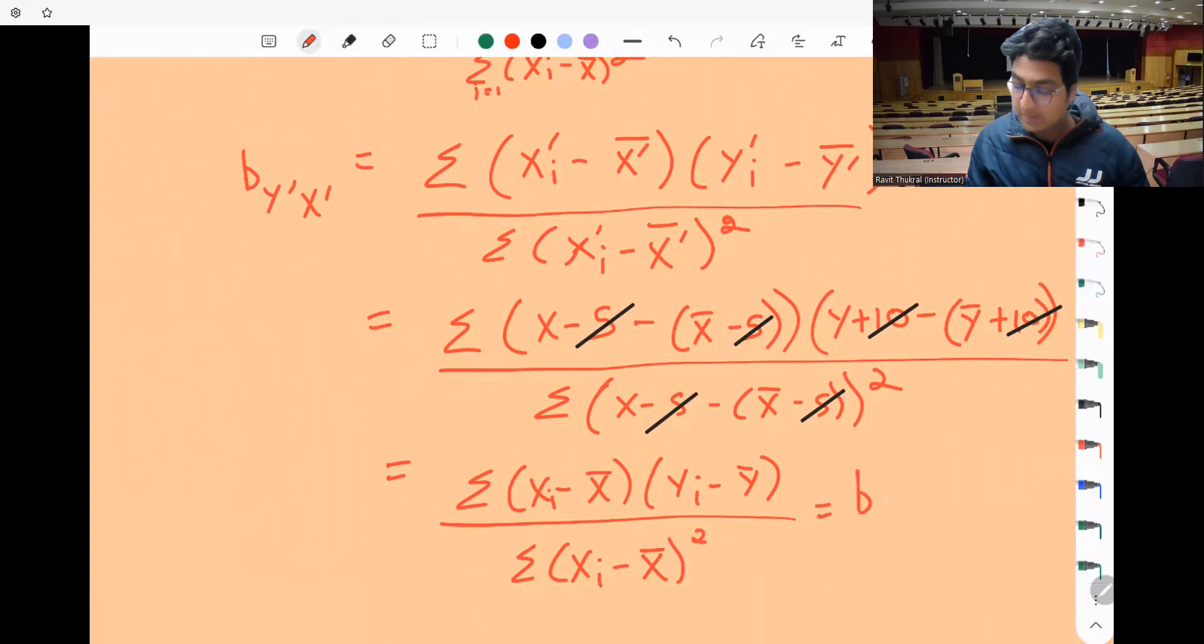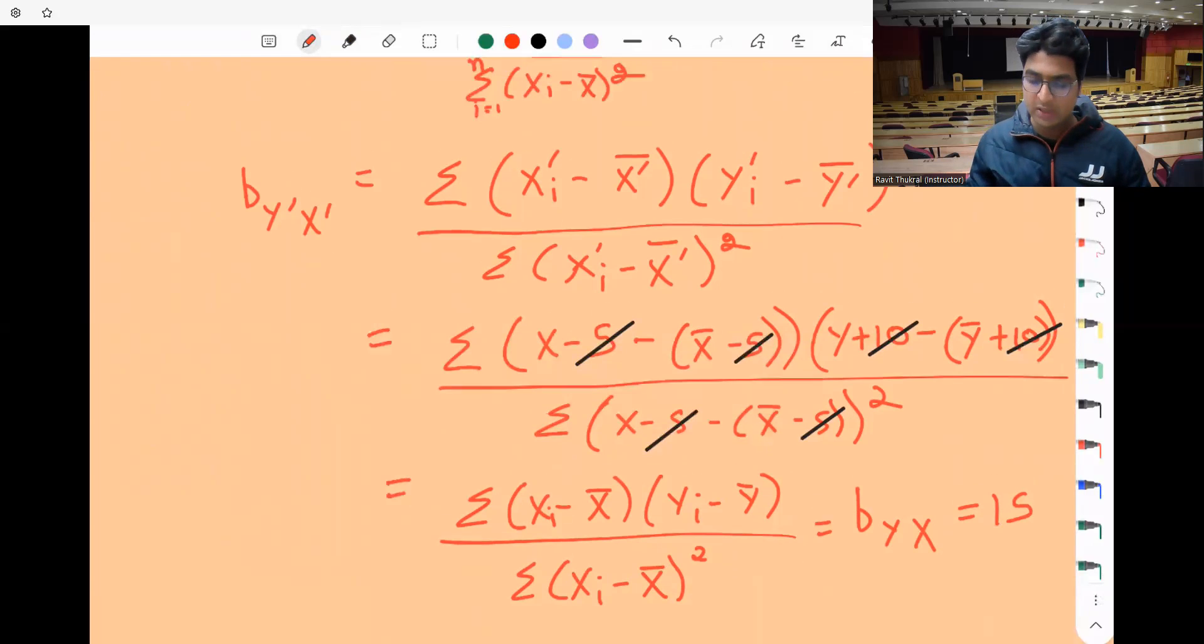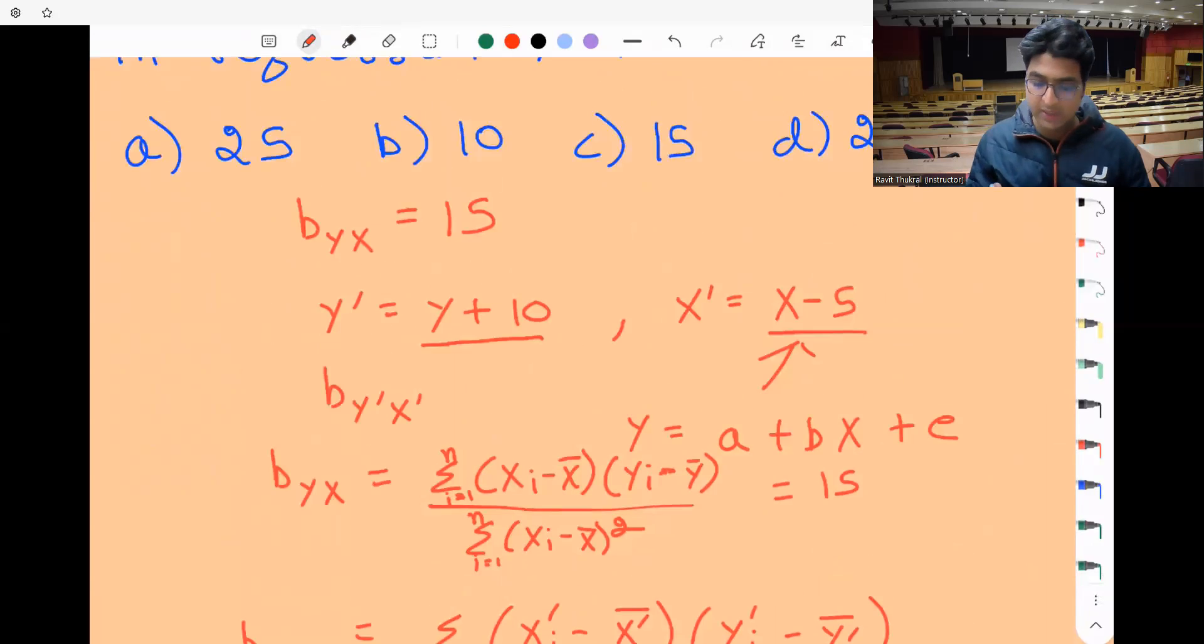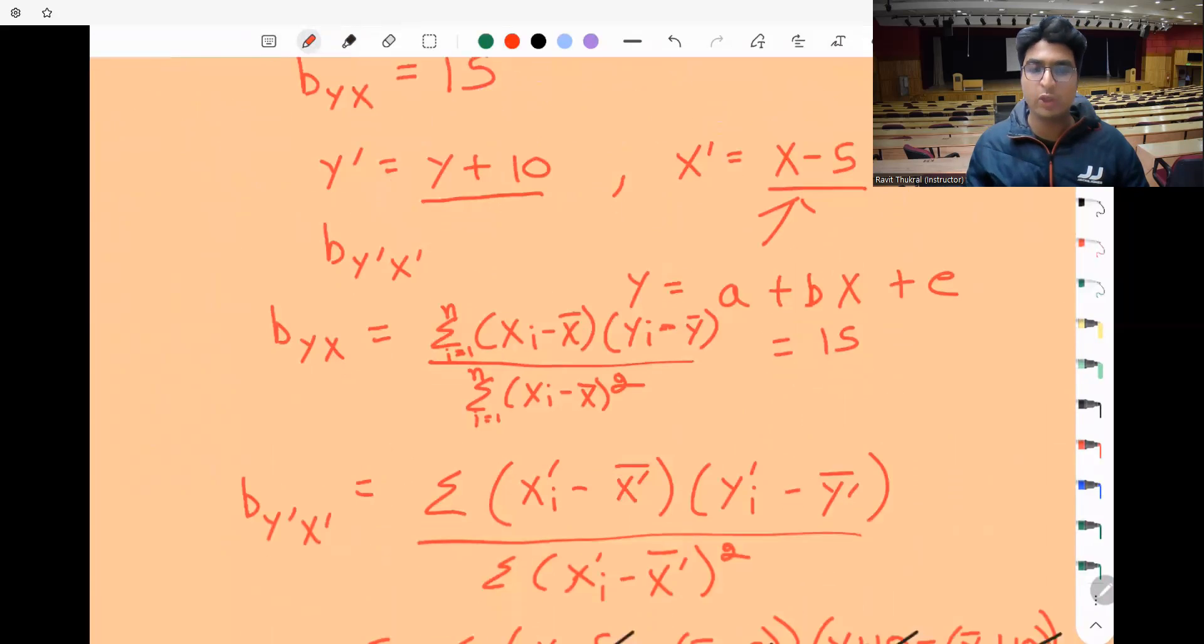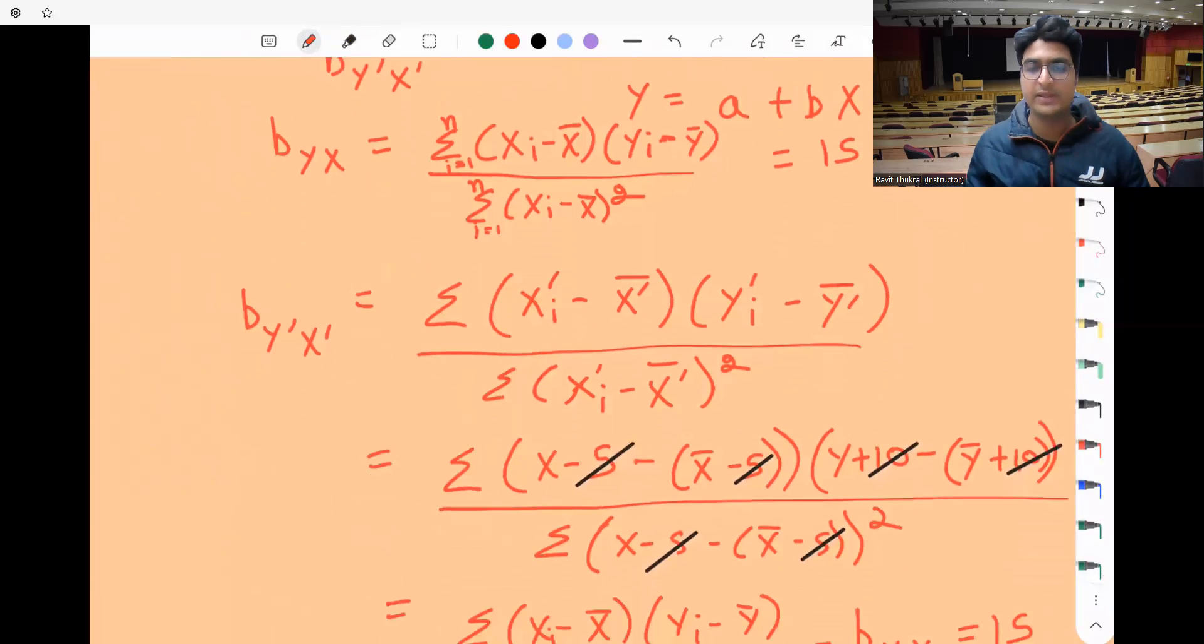Basically, no change in the slope coefficient. The slope coefficient remains the same, so the answer will be 15 only. No change in the slope coefficient.